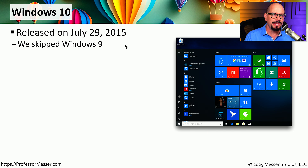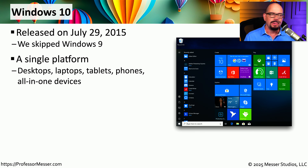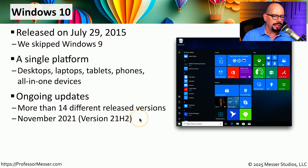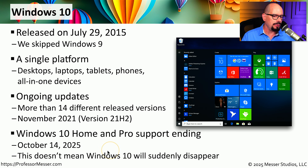We went directly from Windows 8 to Windows 10, so you'll never see any references to Windows 9. Windows 10 was designed to be a single platform that would work across multiple devices. Through the Windows 10 lifecycle, there were more than 15 different released versions, with the last one being in November of 2021, which is version 21H2. Microsoft has already stated that Windows 10 Home and Windows 10 Pro support will end on October 14th of 2025.